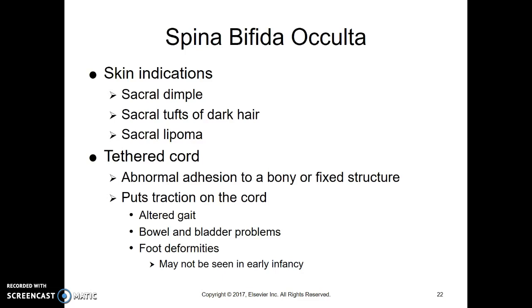Spina bifida occulta does not have the bubble coming out — nothing visible except that dimple, that tucked-in area of skin. Sometimes it's not a dimple but a tuft of hair, a lipoma, or a fatty cyst. Something not noticed at birth but semi-related is a tethered cord — an adhesion to the vertebrae causing tension on the spinal cord. It can affect gait, bowel and bladder habits, and cause foot deformities. It's noticed later in childhood, and surgery is done to release the tethered area.